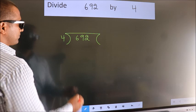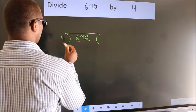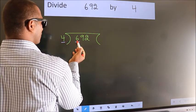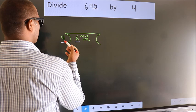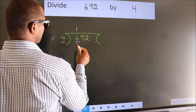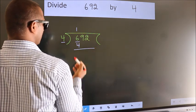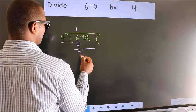Next. Here we have 6, here 4. A number close to 6 in the 4 table is 4 once 4. Now we should subtract. We get 2.